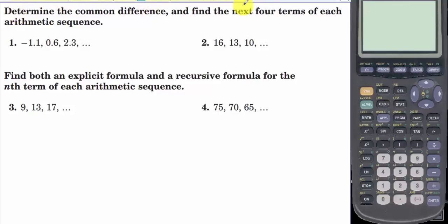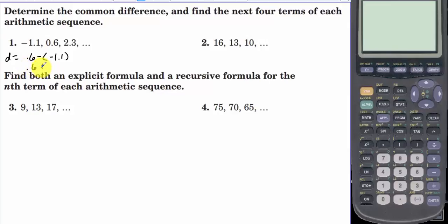Determine the common difference and find the next four terms of each arithmetic sequence. Let's find the common difference D. It's 0.6 minus negative 1.1, which is 0.6 plus 1.1, equal to 1.7.